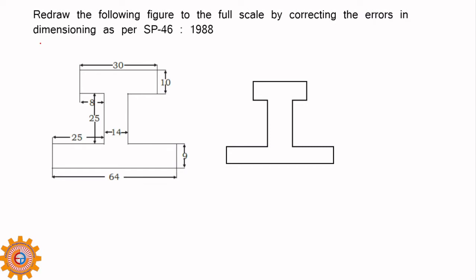To dimension the top part, the dimension line must be shown here. It is very near to this one — it must be at least 8 to 10 mm away. Keep that in mind. This is unidirectional, but you can also keep the aligned system. He has not mentioned specifically which method to use — alignment or unidirectional.